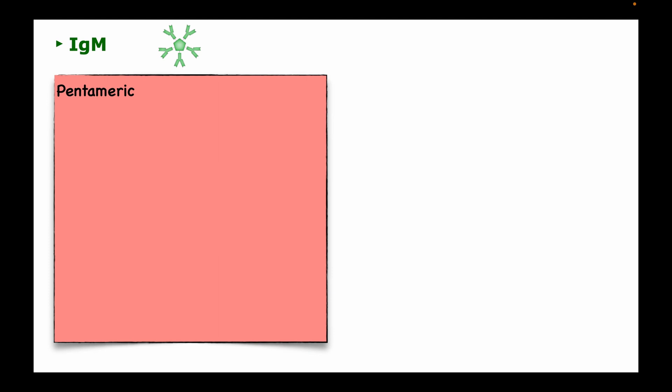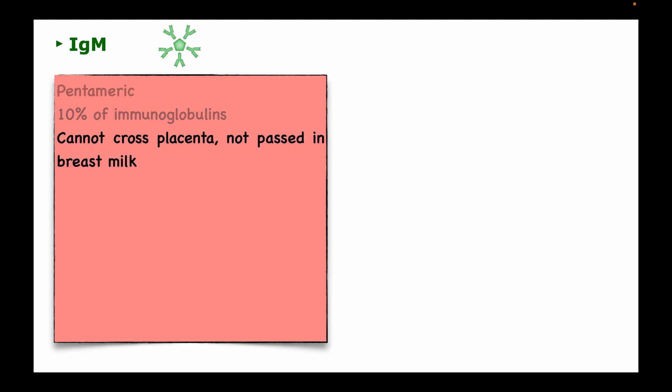Immunoglobulin M is a pentamer, having five basic Y-shaped molecules linked together. It accounts for about 10 percent of all immunoglobulins and circulates in the blood. Immunoglobulin M cannot cross the placenta — it is usually too large — and it cannot be transferred to the infant through breast milk.